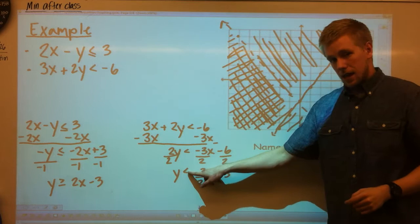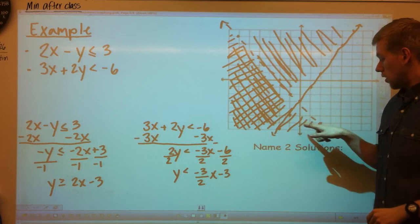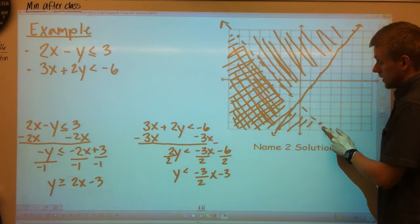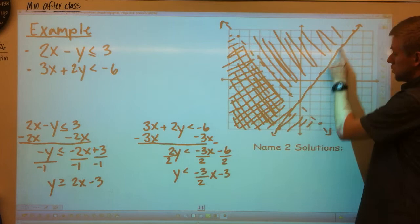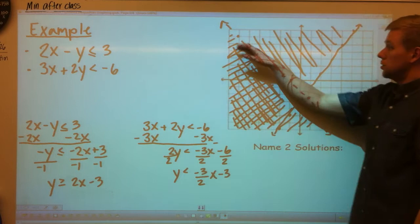Then my second line, y less than negative 3 halves x minus 3. So start at, again, negative 3, go down 1, 2, 3 over 2. If I wanted to go backwards, I'd just do the opposite. And then you can see I have a dotted line here. It is a dotted line because there's no line underneath it. It can only be, any solution can only be below that line. It can't be on the line. Like this one had a solid line. This one's dotted for a reason because it's less than. So no solutions could be on the line, but they could be below.